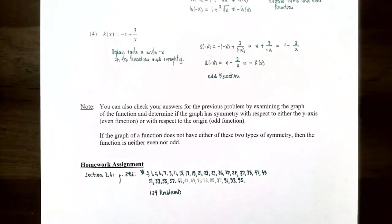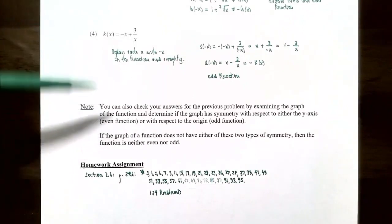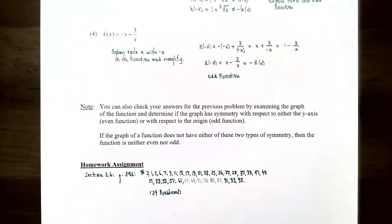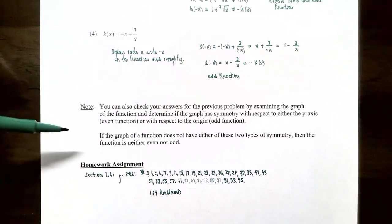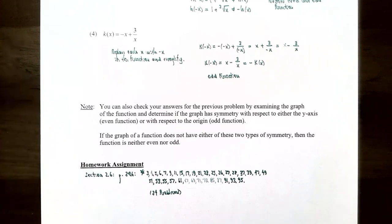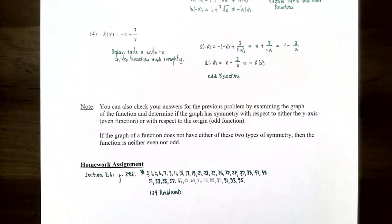Keep in mind that as you check whether functions are even or odd using the algebraic method, there's also a graphical method. If you examine the graph and see symmetry with respect to the y-axis, the function is even. If the graph has symmetry with respect to the origin — a 180-degree or half turn — the function is odd. And a function with neither y-axis symmetry nor origin symmetry is neither even nor odd. This finishes our discussion on transformations involving vertical and horizontal stretching and shrinking, and testing whether a function is even or odd. I'll see you in the next video when we talk about combining functions.